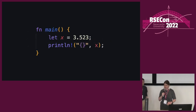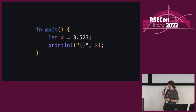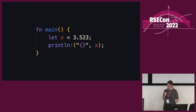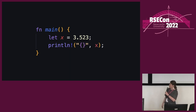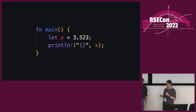We've also got baby's first variable. Rust is strongly typed but it does have type inference, so here we haven't had to say that X is an F64 — Rust can infer it by the decimal point. And with the print function, you can have formatting like you do in Python.